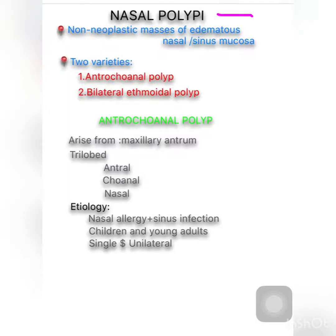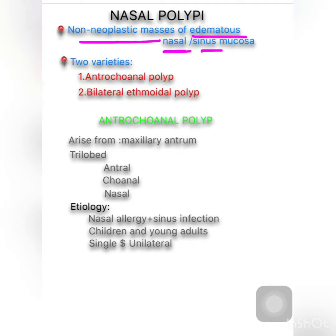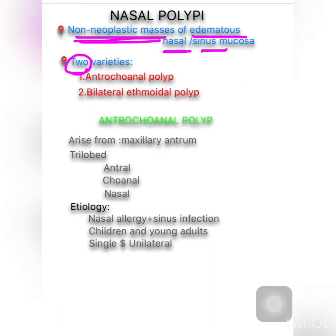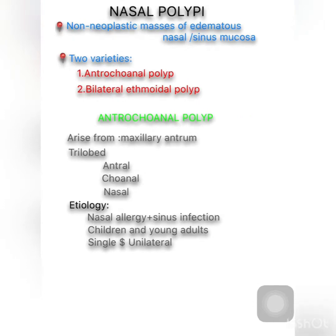Good day guys, today we are going to talk about nasal polyp, which is a very important topic and may come as an SAQ for third year MBBS. Nasal polyps are non-neoplastic masses of edematous nasal mucosa or sinus mucosa. We can talk about the two varieties: antrochoanal polyp and bilateral ethmoidal polyp.